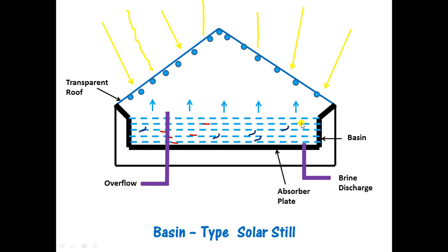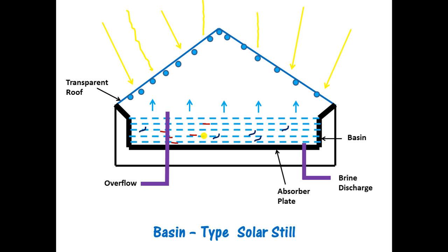After the water has evaporated, the impurities left over are taken out using brine discharge. The white material visible here is the insulation, which prevents any heat loss from the chamber. This completes our overview of solar distillation.